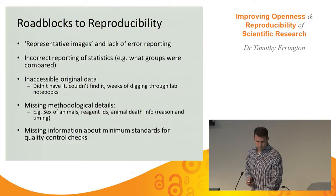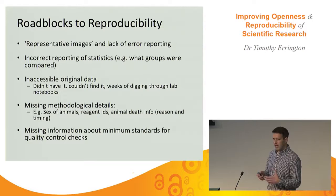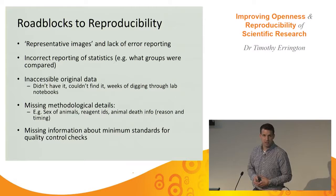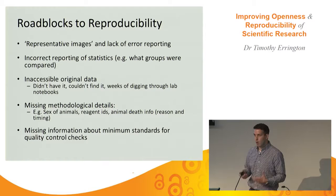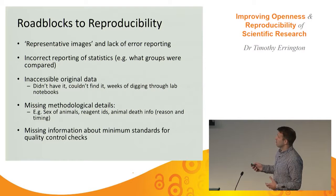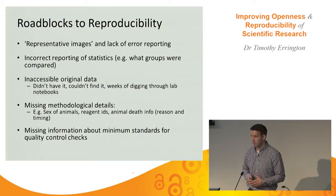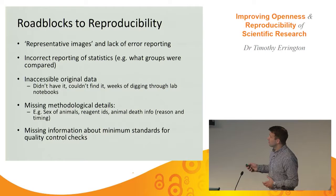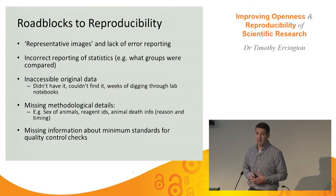What are some of the roadblocks we encountered early on? Very commonly, representative images were given without any real appreciation for the biological variability we all know about but don't always communicate. Sometimes there was incorrect or inaccurate reporting of statistics — not actually knowing what groups were being compared, even though p-values less than 0.05 were being reported. A lot of the time the data or methods were just not accessible — we didn't know them, and then the authors had a hard time finding them.